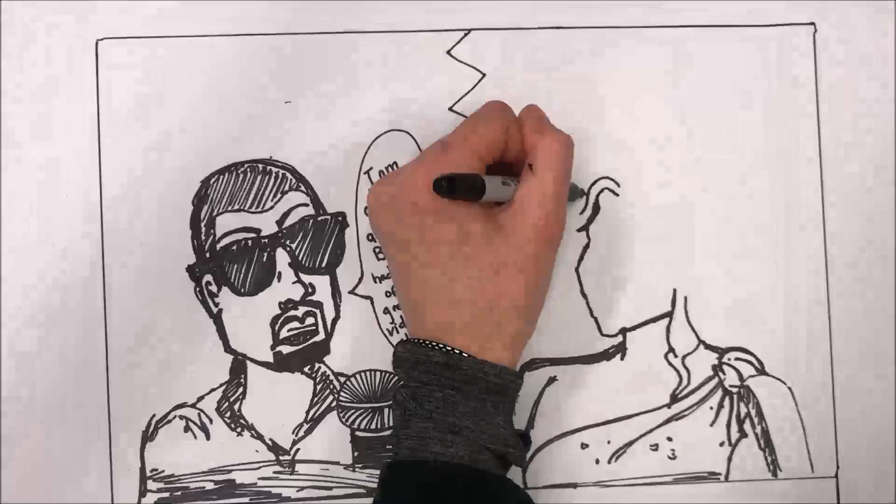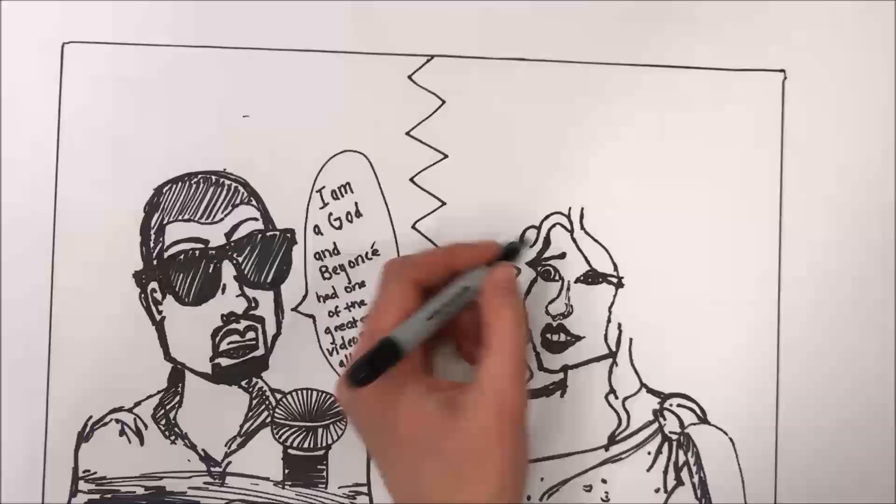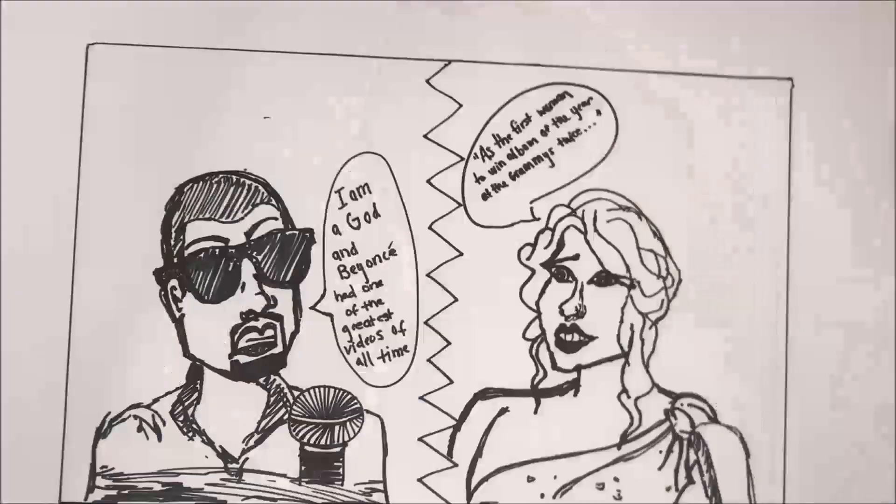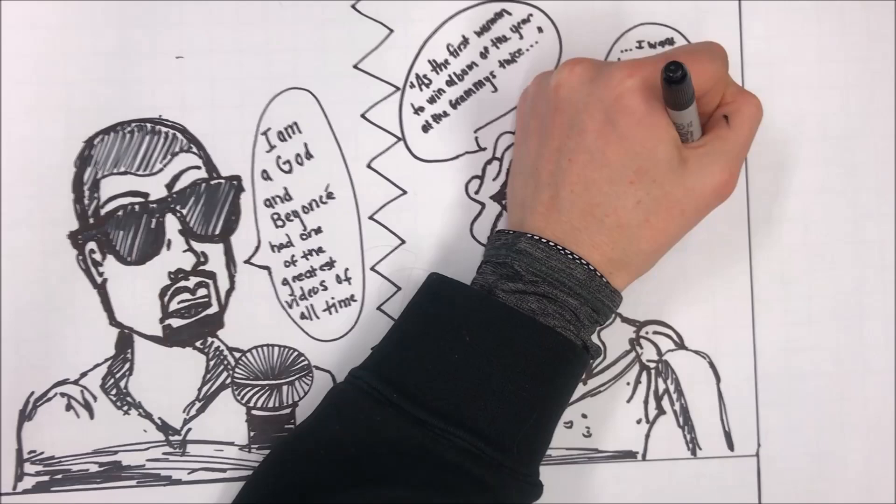In the second panel, Taylor Swift employs ethos as a comeback to Kanye West's interruption by introducing herself as the first woman to win Album of the Year at the Grammys twice. She then appeals to pathos by relating herself to her audience of young women through an emotional speech.